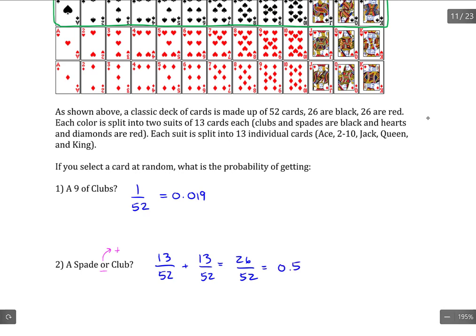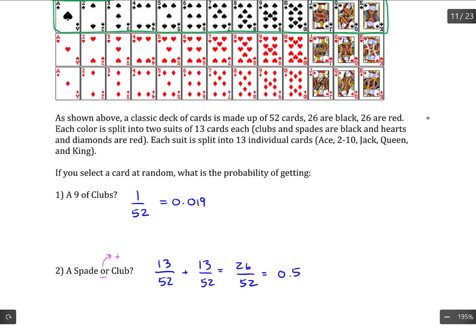Or half of the deck or 50%. Another way to think of it is a spade is one of the four suits, and clubs is another one of the four suits. So one fourth plus one fourth would also give us one half.